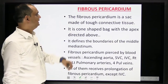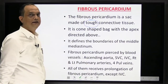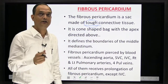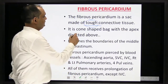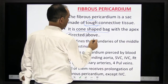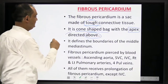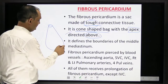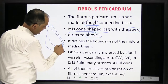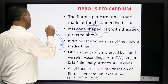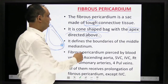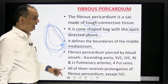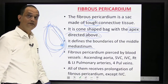The fibrous pericardium is a sac made up of tough connective tissue. The fibrous layer is tough while the serous layer is soft — it is a membrane. An important point: the fibrous pericardium is a cone-shaped bag with its apex directed upward. Note that the heart's apex points downward, but the fibrous pericardial sac has its apex pointing upward. It defines the boundaries of the middle mediastinum.